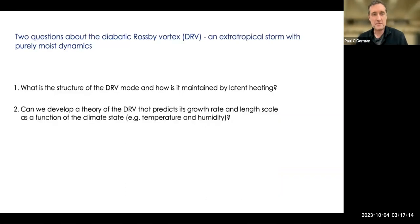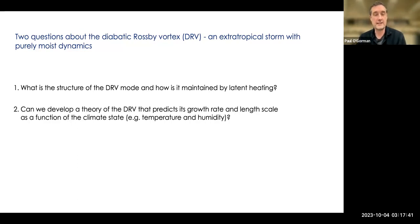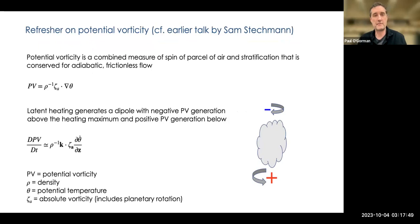For the rest of the talk, I want to address two questions about diabatic Rossby vortices. You can think of them as extratropical storms with purely moist dynamics in a certain limit. First, what is the structure of this diabatic Rossby vortex mode found in the hot climate, and how is it maintained by latent heating? And our main point is that we have a new theory for the diabatic Rossby vortex that predicts its growth rate and length scale as a function of the climate state — meaning the temperature profile and the humidity.